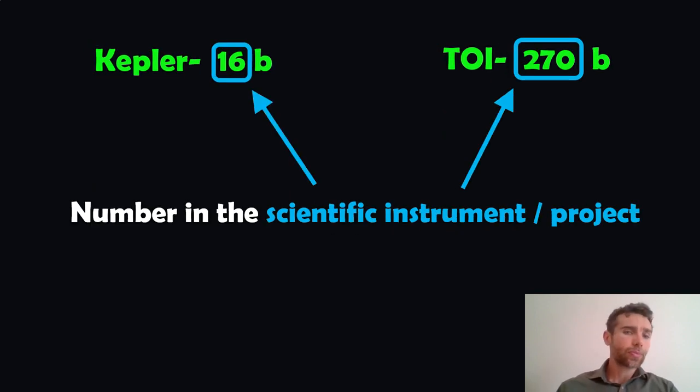The next part is going to be a number. This will be the number in the scientific instrument or the project or the catalogue. Kepler 16 would mean that it's probably the 16th one discovered in that particular catalogue. It's a pretty logical numbering and naming system.